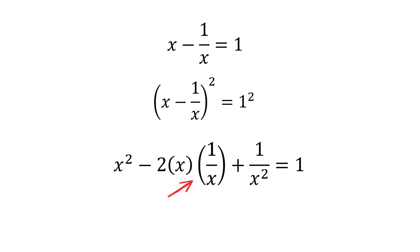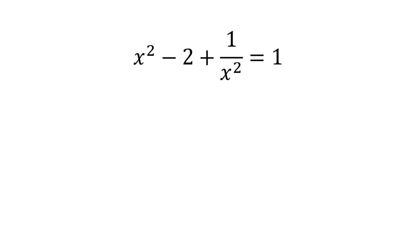Now, look at that middle term. The x and the 1 over x cancel each other out, leaving just minus 2. That is the aha moment. So our equation is x squared minus 2 plus 1 over x squared equals 1. Now, just move that minus 2 to the other side. And we get our first result: x squared plus 1 over x squared equals 3.